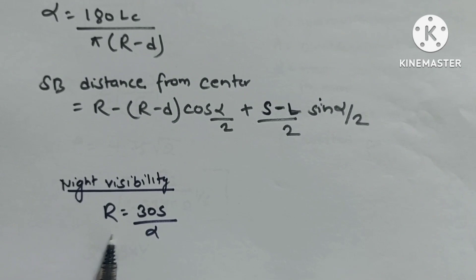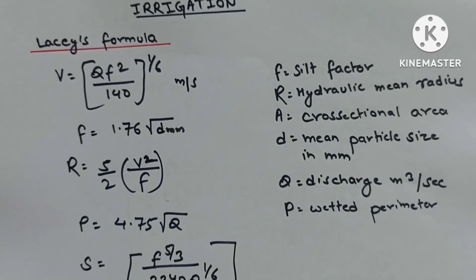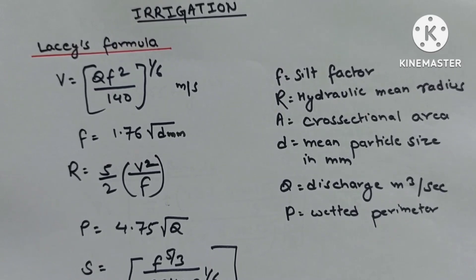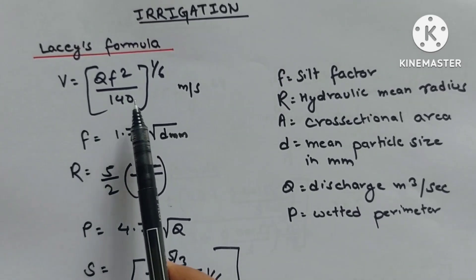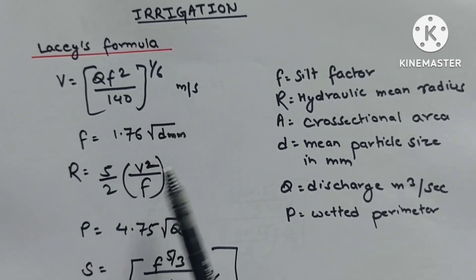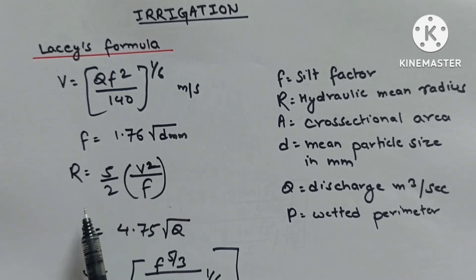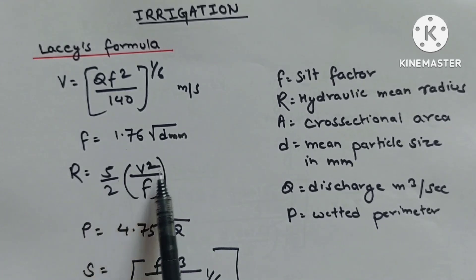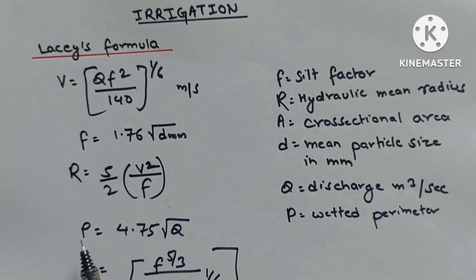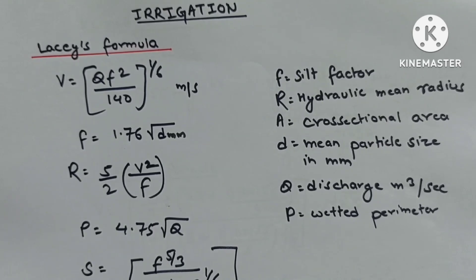Night visibility: R = 30S/α. Irrigation design formulas: B = (Qf²/140)^(1/6), f = 1.76√d mm, R = (5/2)B²/f, P = 4.75√Q, S = f^(5/3)/(3340Q)^(1/6), Q = Area × velocity.